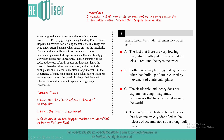Option D states that the basis of the Elastic Rebound Theory has been incorrectly identified as the release of accumulated strain along fault lines. Option D is clearly wrong because the author does not doubt the basis of the theory — the basis is correct. The author is simply pointing out that there are many other possibilities for earthquakes. That doesn't mean the theory is incorrect. He concludes that there may be other factors responsible for causing earthquakes. So Option D can be eliminated, and the correct answer is Option B: Earthquakes may be triggered by factors other than the buildup of strain caused by movement of continental plates.